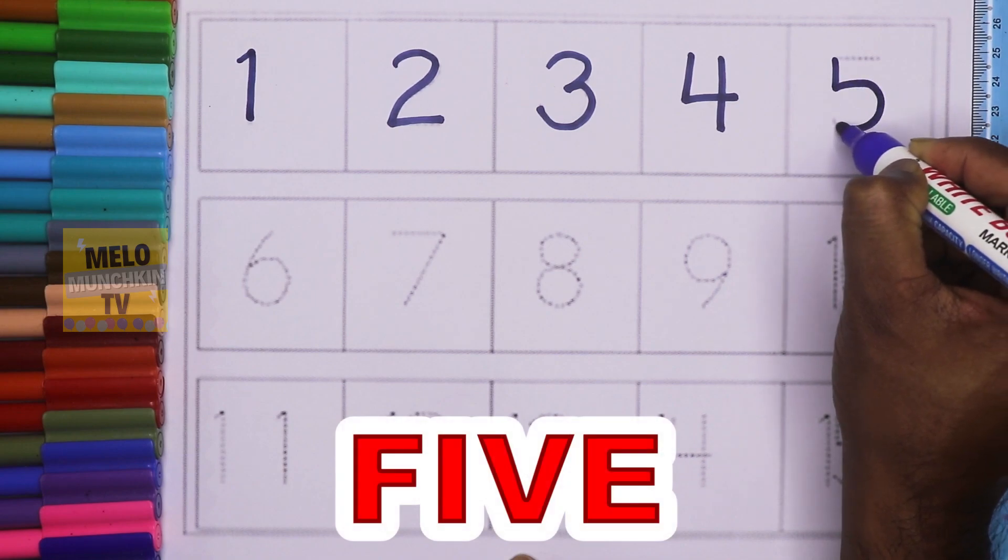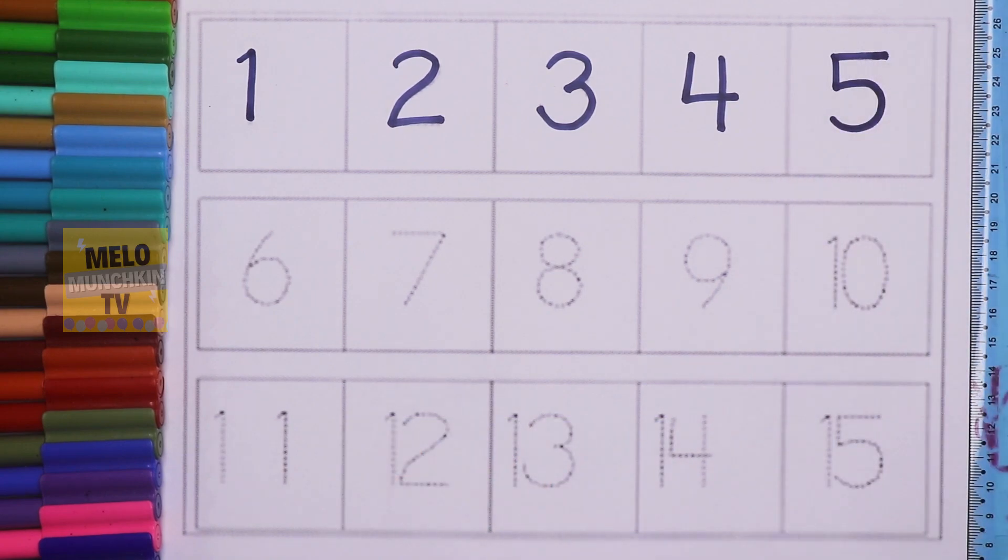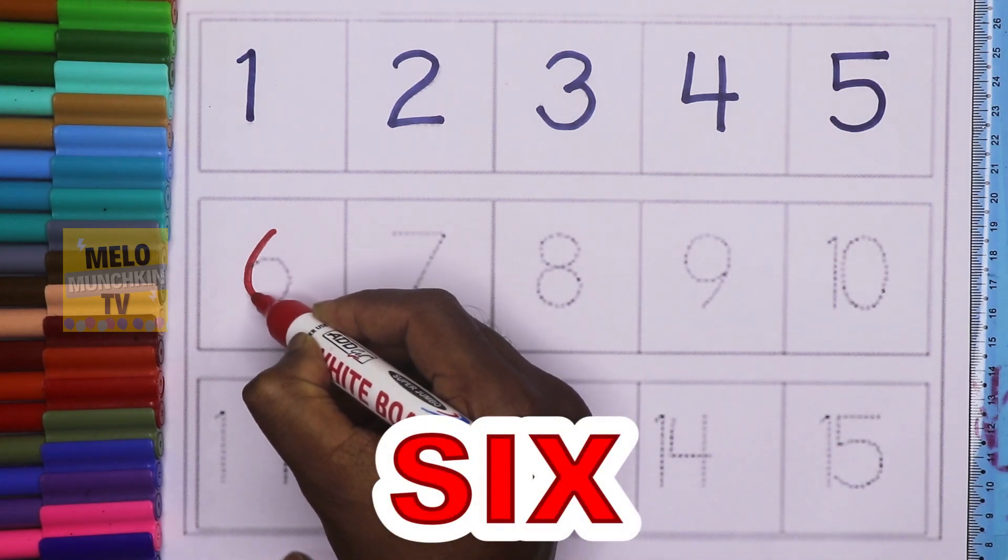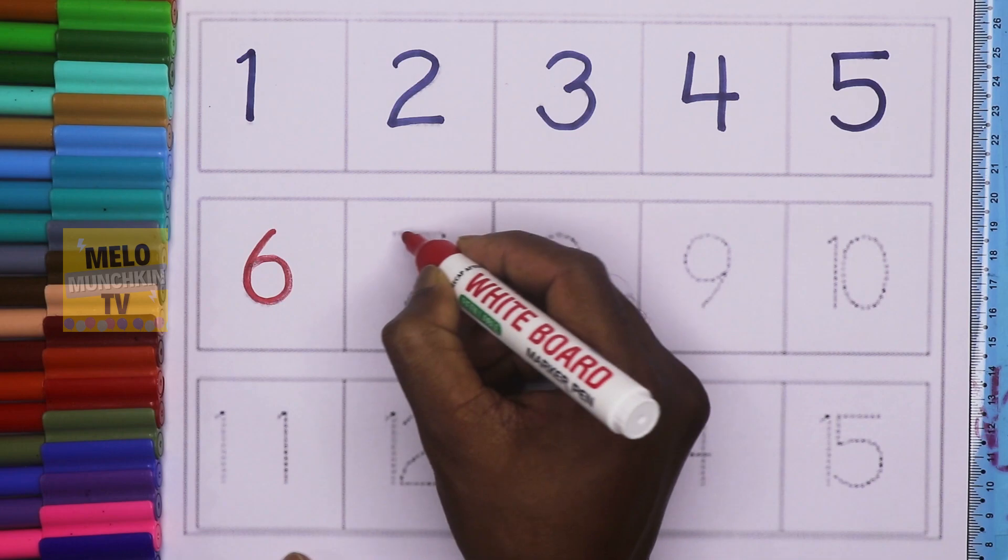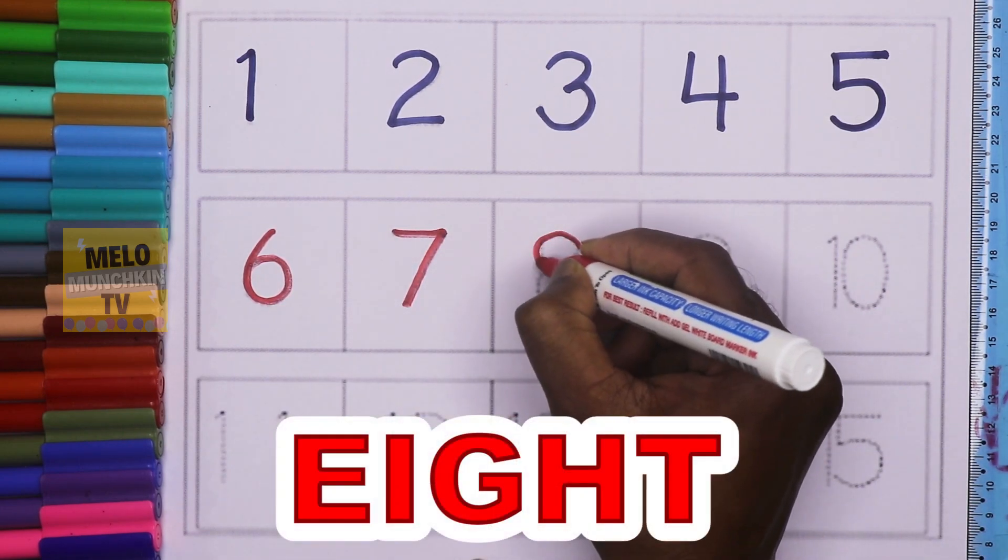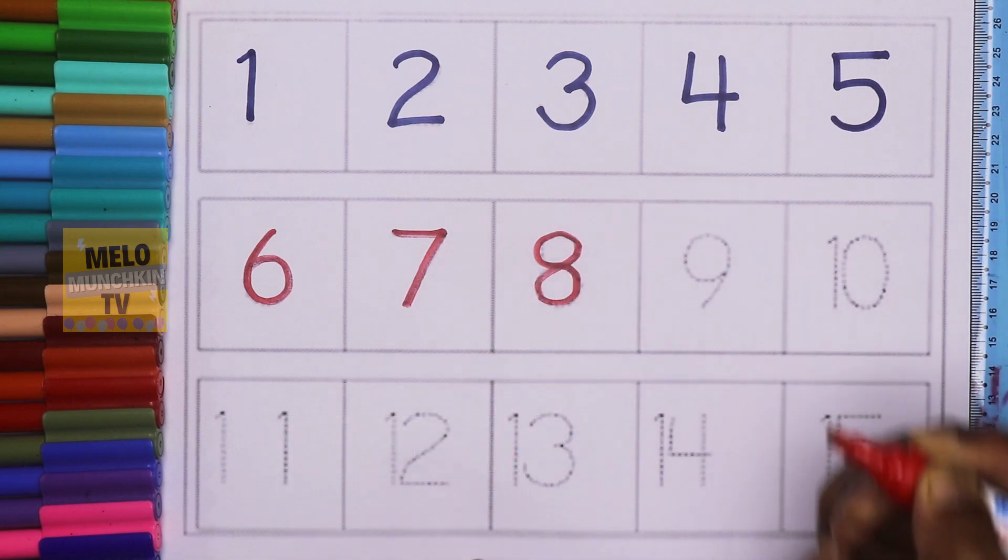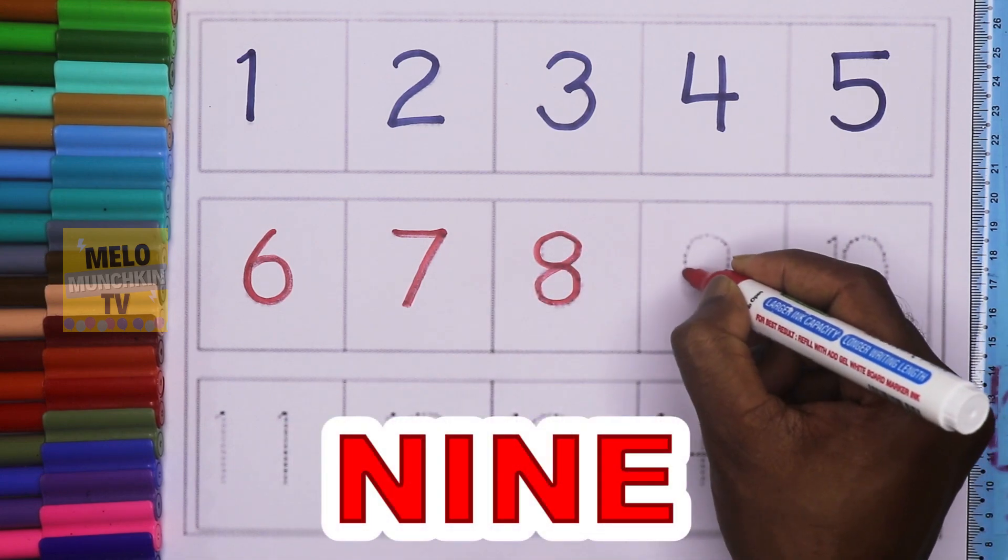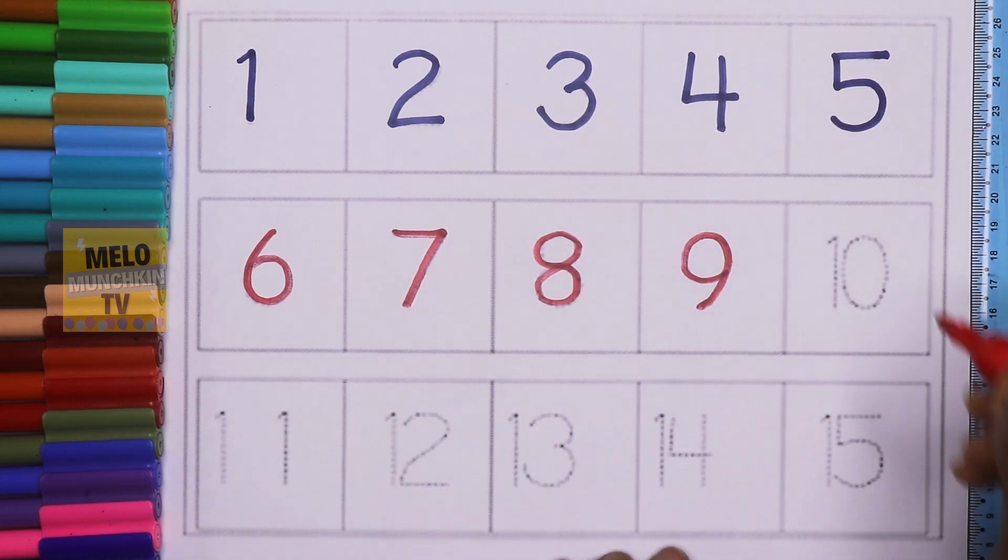The next color is red. 6, s-i-x, six. 7, s-e-v-e-n, seven. 8, e-i-g-h-t, eight. 9, n-i-n-e, nine. 10, t-e-n, ten.